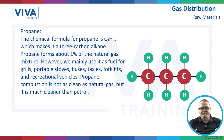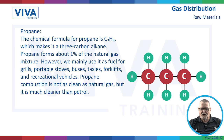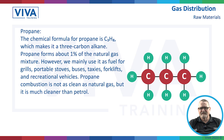Then we've got propane — C3H8, so three carbons and eight hydrogens. It's a three-carbon alkane and it's only 1% of natural gas, so quite a small amount. But it's removed and can be sold — we use it for grills, portable stoves. You can also use it for transport: gas-powered buses and taxis, forklift trucks and recreational vehicles. Propane combustion is not as clean as natural gas, but it's much cleaner than burning petrol.